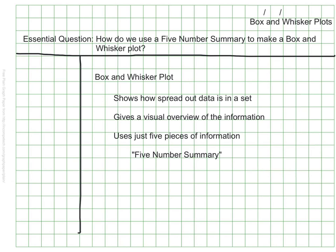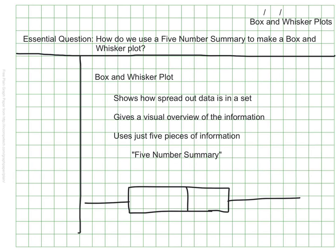A box and whisker plot looks something like this. The name comes from the idea that there is a box, and the lines on the sides are whiskers — like a cat, with whiskers sticking out. That's sort of the general idea of where the name comes from, though you'll also hear it sometimes just called a box plot.